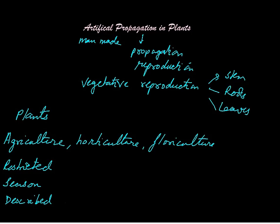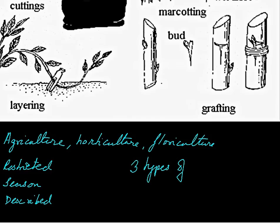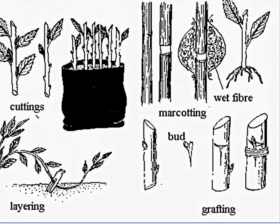There are three types of artificial propagation. They are cutting, layering, and grafting.